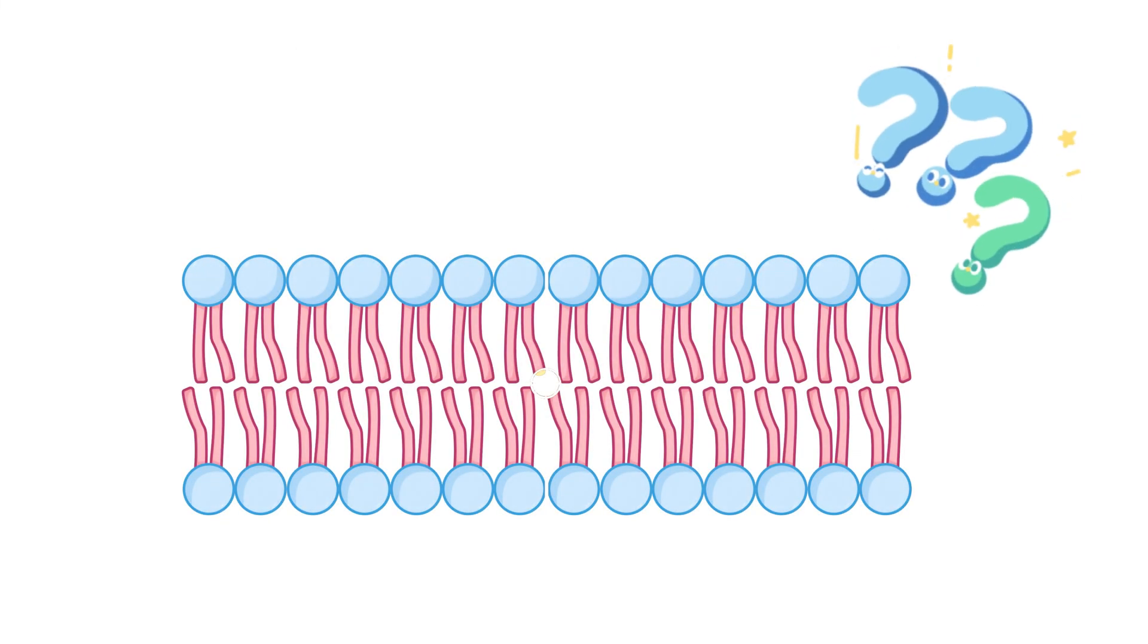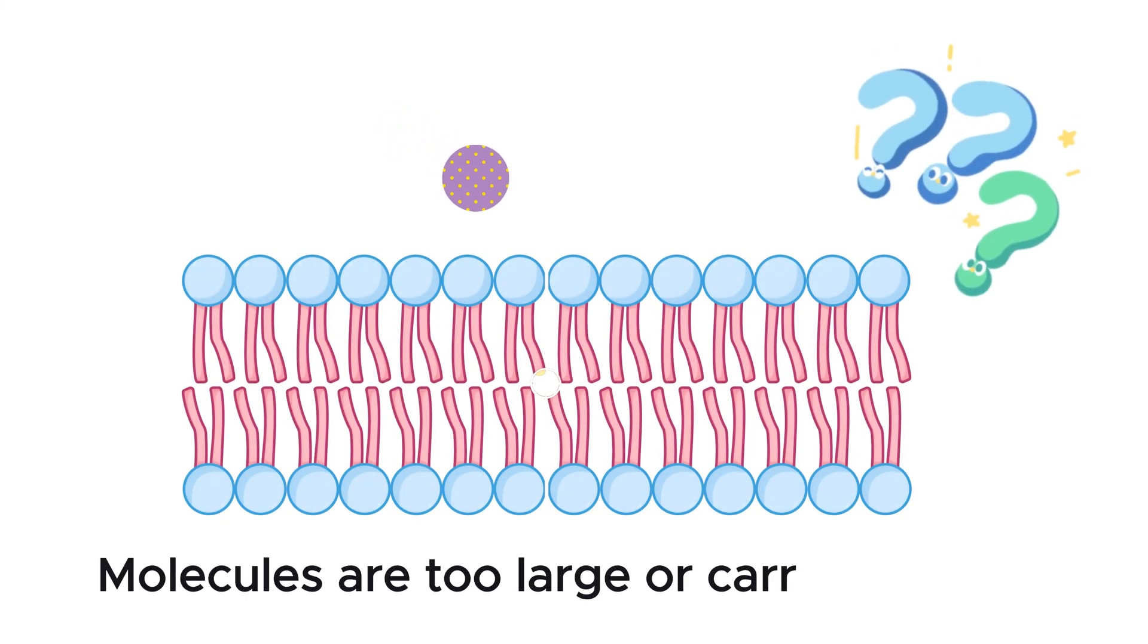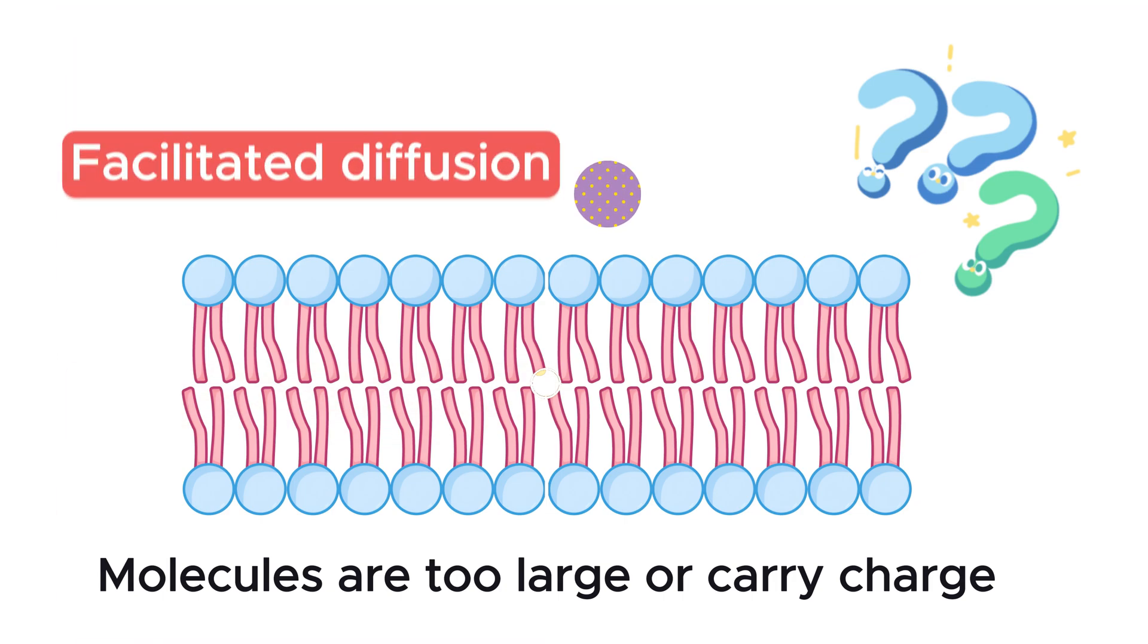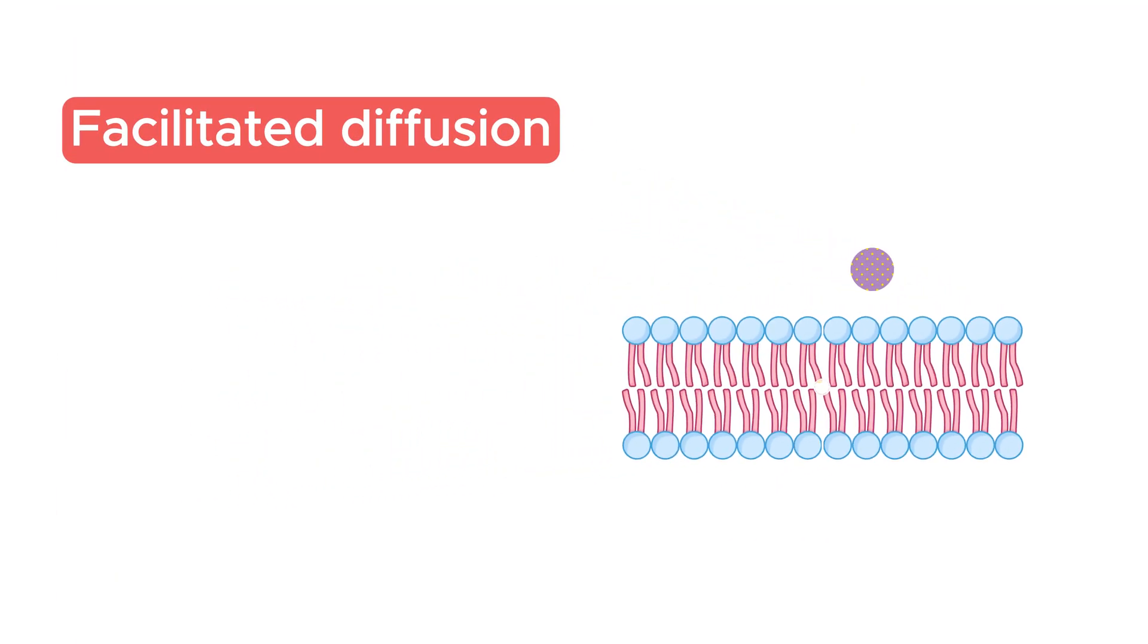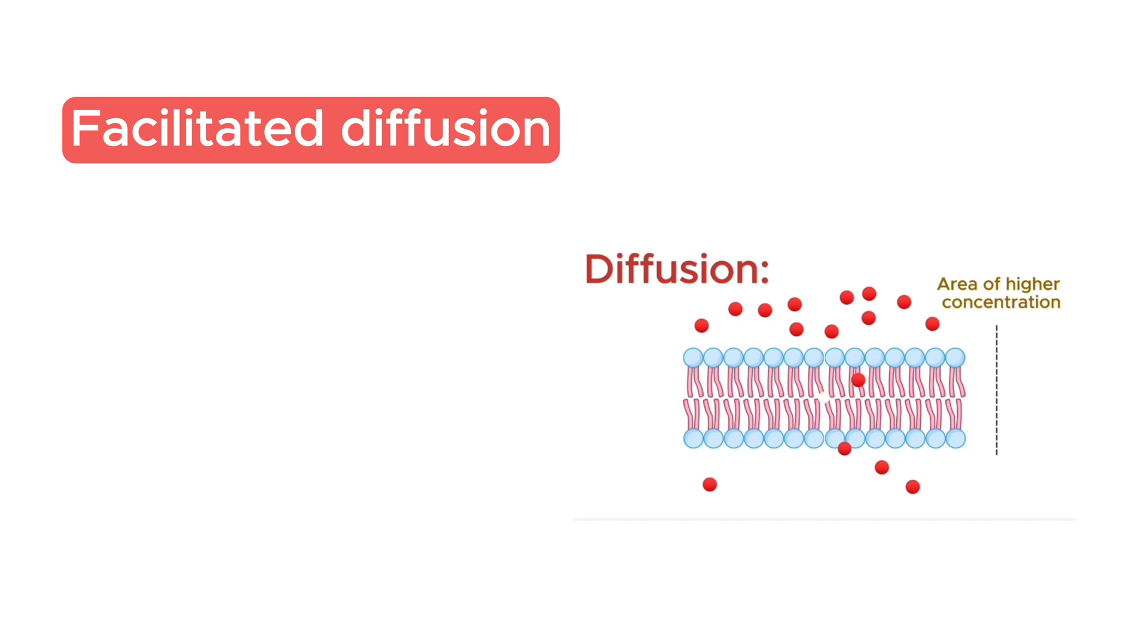But what happens when the molecules are too large or carry a charge? In that case, the cell needs a different strategy. To find out what the cell does when diffusion needs a little help, check out our next video on facilitated diffusion. I'll see you there.